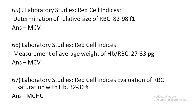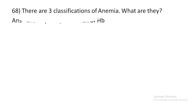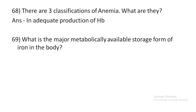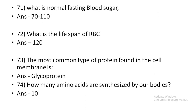MCHC. There are three classifications of anemia. One classification is inadequate production of hemoglobin. The major metabolically available storage form of iron is ferritin. Which test can be used to detect hemolytic anemia? Coombs test.